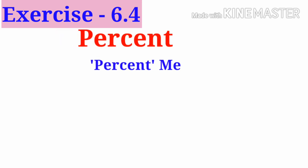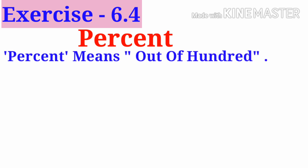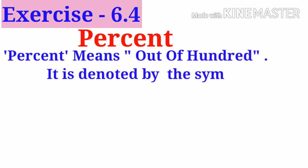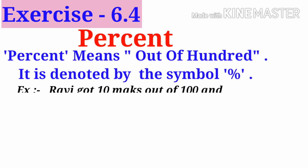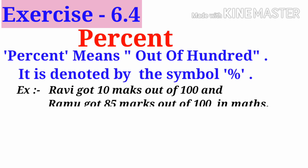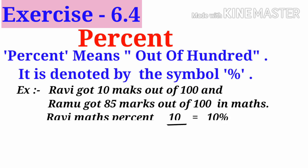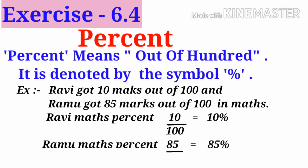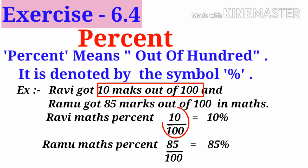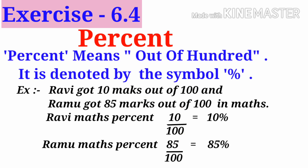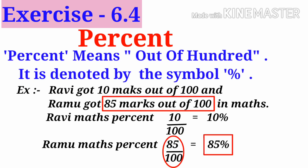What is percent? Percent means out of 100. It is denoted by the symbol percent. For example, Ravi got 10 marks out of 100 and Ramu got 85 marks out of 100 in maths. 10 marks out of 100 means the percentage is 10 by 100, which is 10 percent. Ramu's maths percentage is 85 marks out of 100, that is 85 by 100, which is equal to 85 percent.